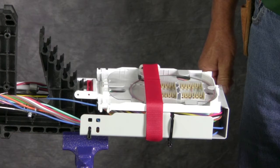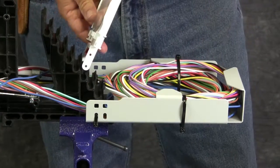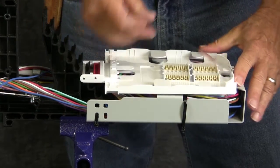Splice trays hold and protect fiber optic splices and store extra fiber. Working from the basket up, attach the splice trays to the tray tower.